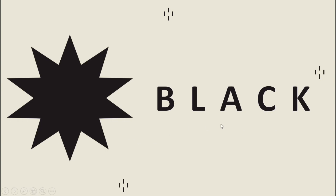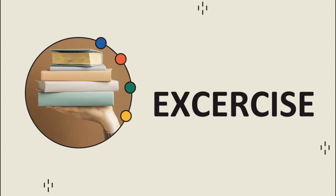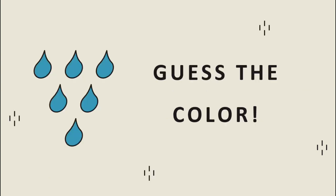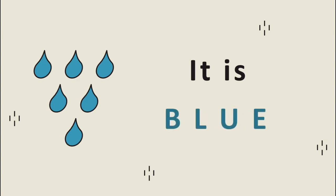Jadi kita sudah belajar nine colors in English — sembilan warna dalam bahasa Inggris. Sebelum kita tutup video hari ini, Miss Ika akan ajak anak-anak untuk doing exercise. Kita mulai dari pertama. From this picture, can you guess the color? Apakah kalian bisa menebak warnanya? Very good. It is blue — karena warnanya biru, so we call it as blue.